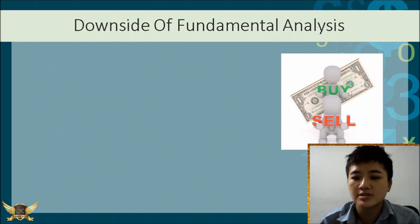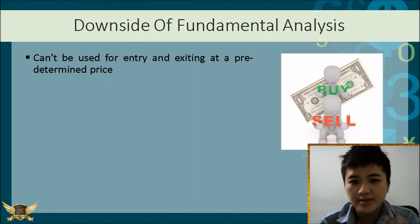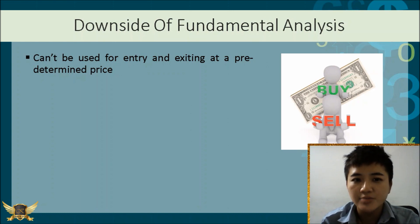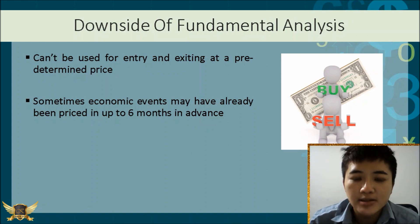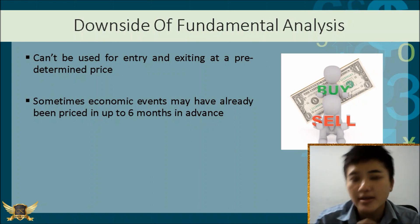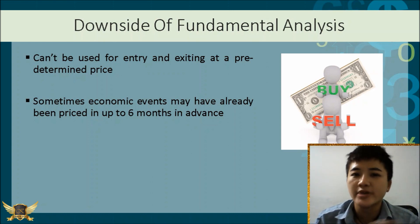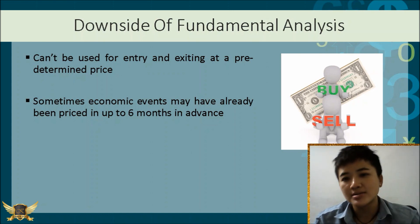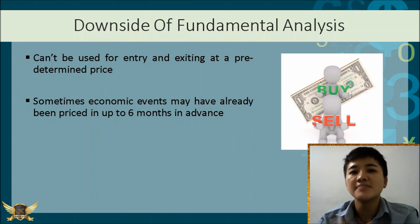There are many downsides of fundamental analysis: you cannot use it to enter and exit trades. It won't give you an exact price to enter or exit. This is where technical analysis comes in — to help you determine exactly which price to enter and which price to exit. Also, if you've heard of the market efficiency theory, sometimes economic events may already have been priced in 6 months in advance — sometimes weeks. The market doesn't wait for the number to come out to react; it gets gradually priced in, so by the time numbers are announced, it may already be too late to enter.